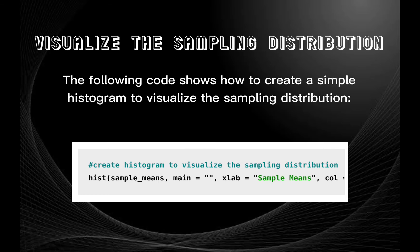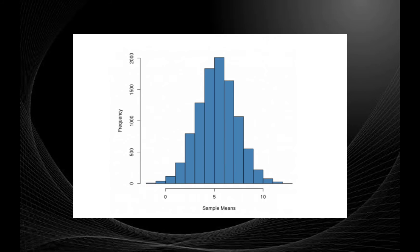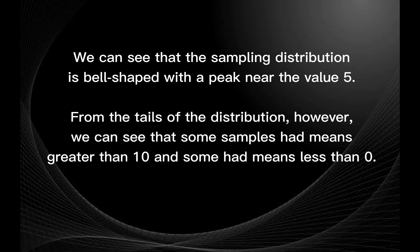The following code shows how to create a simple histogram to visualize the sampling distribution. We can see that the sampling distribution is bell-shaped with a peak near the value of 5.